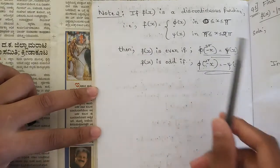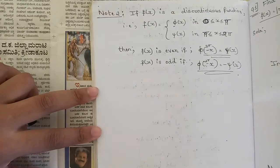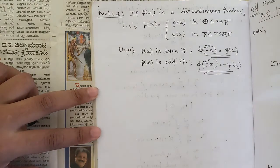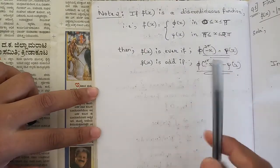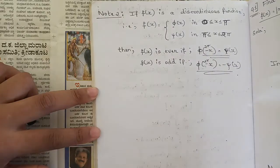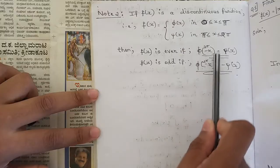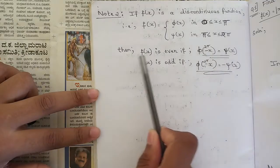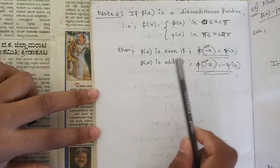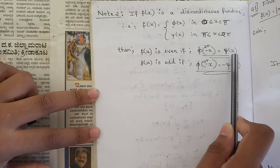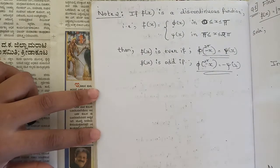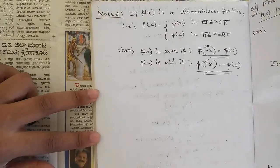If f(x) is a discontinuous function, in this case also there are two values — phi(x) and xi(x) — but the limits change. From minus pi to pi it was minus pi to zero and zero to pi; here it is zero to pi and pi to two pi. There is also a slight change: when f(x) is even, the condition should be phi(two pi minus x) equals xi(x); and phi(two pi minus x) equals minus xi(x) when f(x) is odd. That is the only change — all other things remain the same.